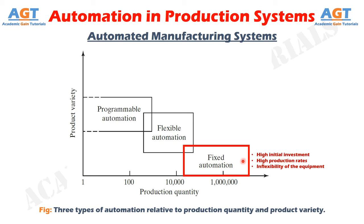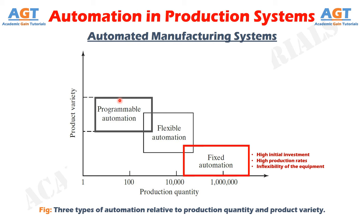Examples of fixed automation include machining transfer lines and automated assembly machines. In programmable automation, the production equipment is designed with the capability to change the sequence of operations to accommodate different product configurations. The operation sequence is controlled by a program, which is a set of instructions coded so that they can be read and interpreted by the system. New programs can be prepared and entered into the equipment to produce new products. Some features that characterize programmable automation include high investment in general purpose equipment, lower production rates than fixed automation, flexibility to deal with variations and changes in product configuration.